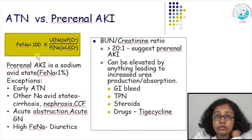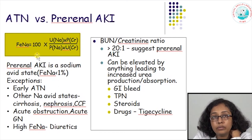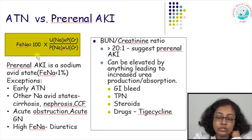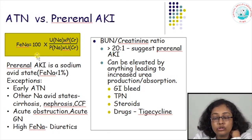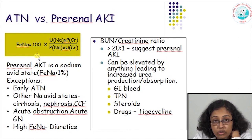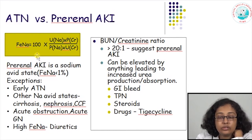Pre-renal patients usually have a high blood urea compared to serum creatinine — the ratio is more than 20:1 — suggesting a pre-renal cause, but this comes with caveats. It could be elevated because of increased urea production or reabsorption, as seen in GI bleeds, steroid use, or certain antibiotics like doxycycline.